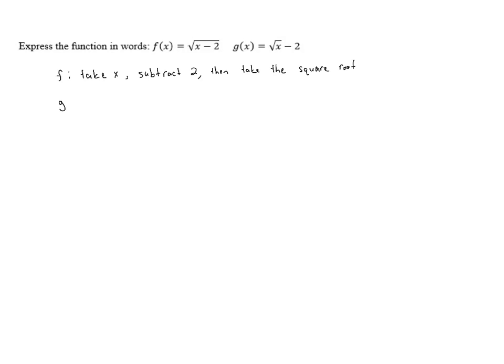g, on the other hand, is a little bit different. Again, we're going to start with x, but here, first, we take the square root, and then we subtract 2. So the order is different.